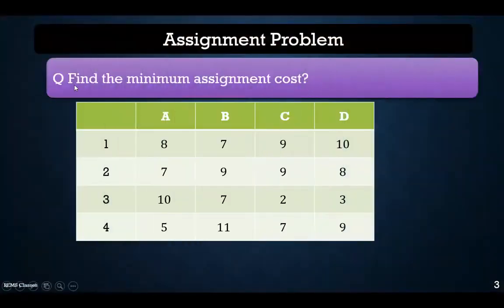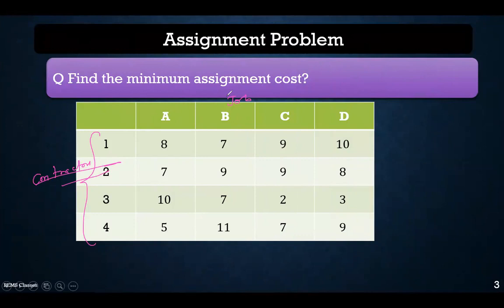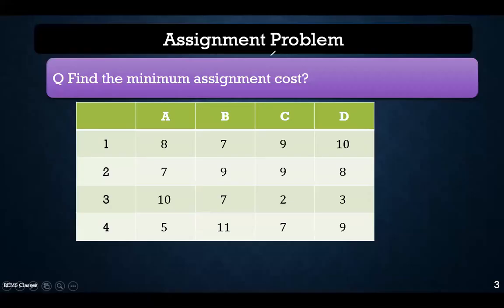In this problem, we have to find the minimum assignment cost. We have four different jobs and four different contractors. We have to assign these four jobs to the four different contractors, and our target is to minimize the cost. We'll use the Hungarian method to minimize the cost.